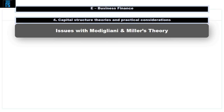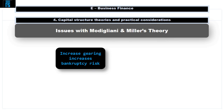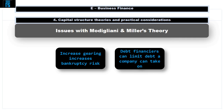There are strong arguments against adopting Modigliani and Miller's theory. First, increased gearing increases bankruptcy risk — if shareholders become concerned about bankruptcy, they will sell their shares, the share price will drop, and the WACC will increase. Debt financing can also place restrictive conditions on companies and limit management activities. Charges can be placed on assets, and debt financiers can restrict the level of dividends paid to shareholders or limit the level of further debt the company can take on.